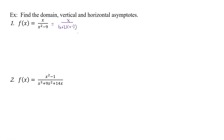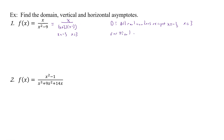Now that makes it much easier. We can set each of those factors in the denominator equal to zero to get our vertical asymptotes as well as the domain. So here x equals negative 3, and here x equals positive 3. Our domain is going to be all real numbers except x equals negative 3 and x equals positive 3. And with that, we get our vertical asymptotes at x equals negative 3 and x equals positive 3.